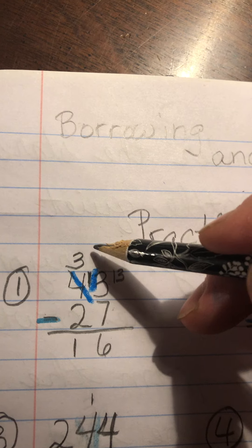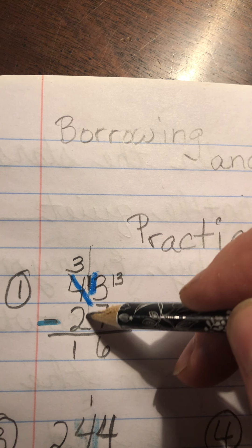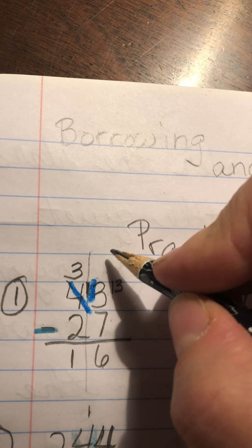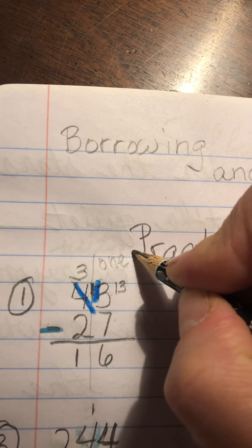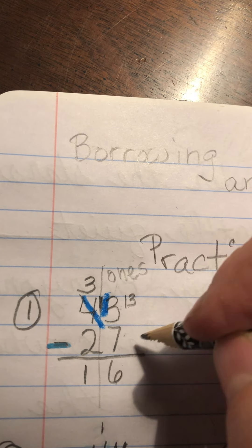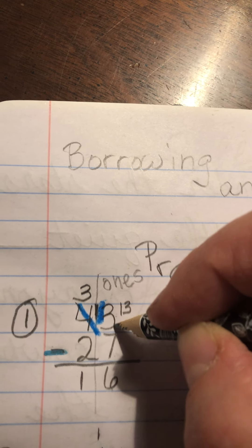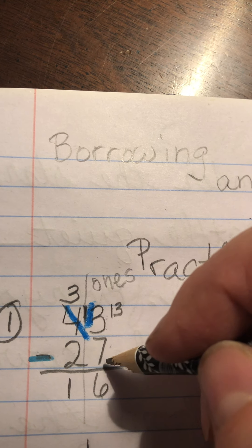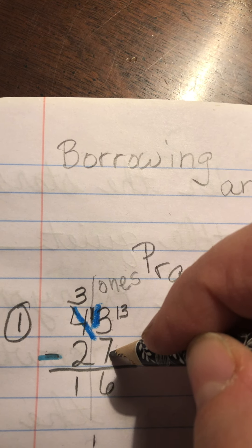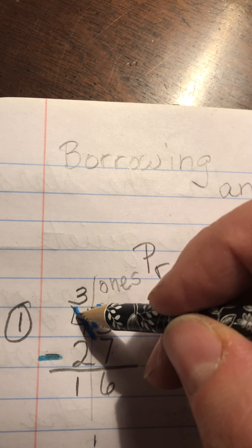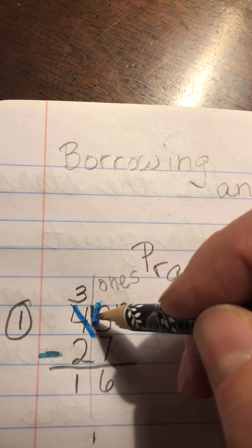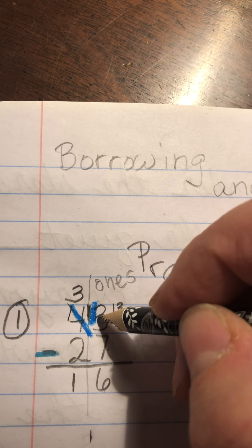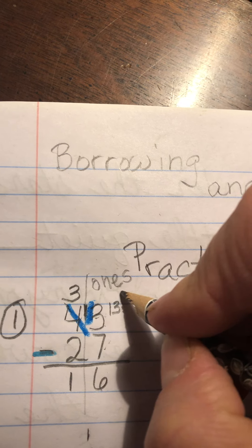So we're starting in the 1's column. This is the 1's. Remember we talked about this before. And because there are only 3 in the 1's column, and we needed 7, we had to come over here to the 40 and take 10 away from 40 and share it with the 3. And that makes 13.